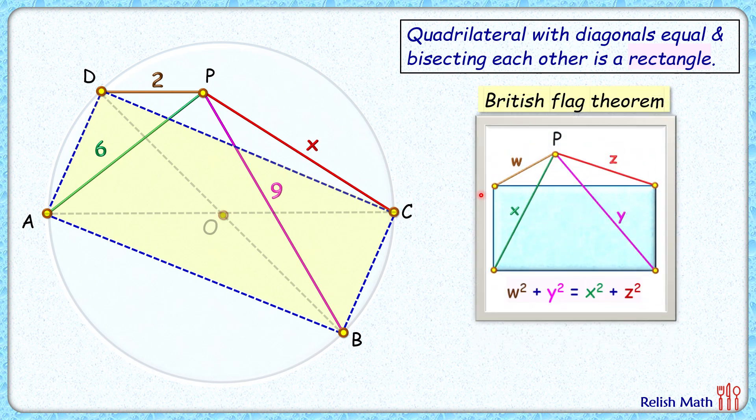The theorem states that if a rectangle is given and you select any point, here point P is there outside the rectangle or inside the rectangle, then the sum of squares of its distance from the opposite vertices will always be equal.